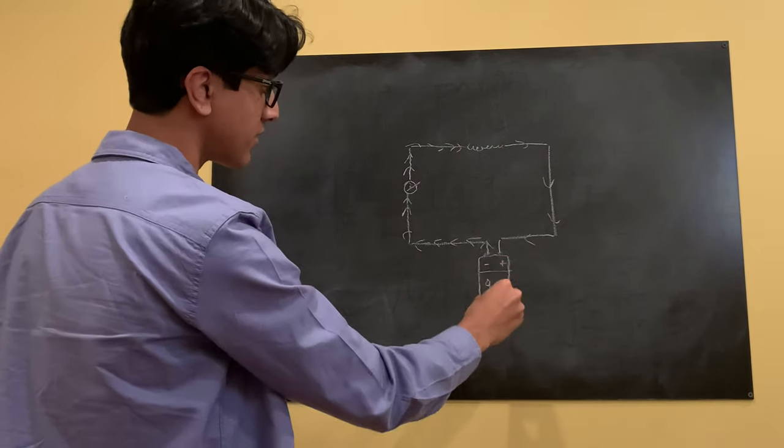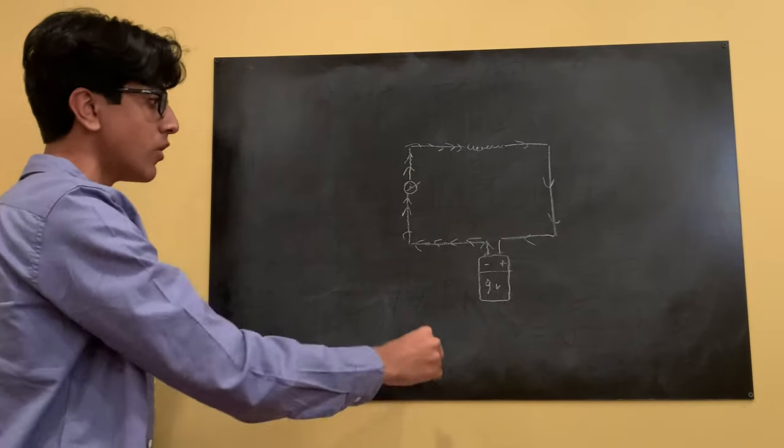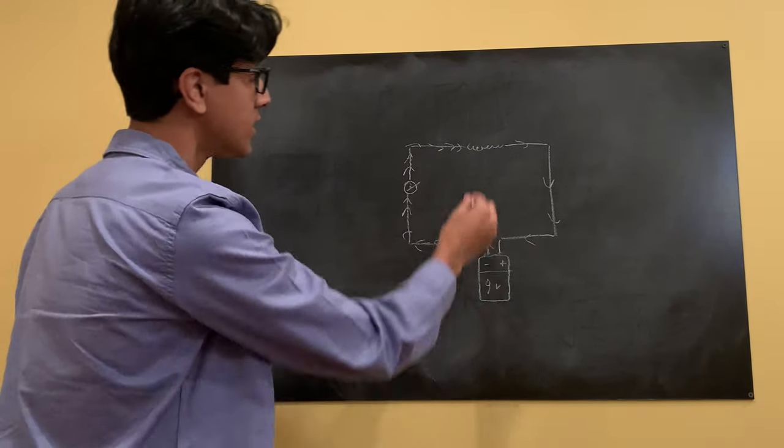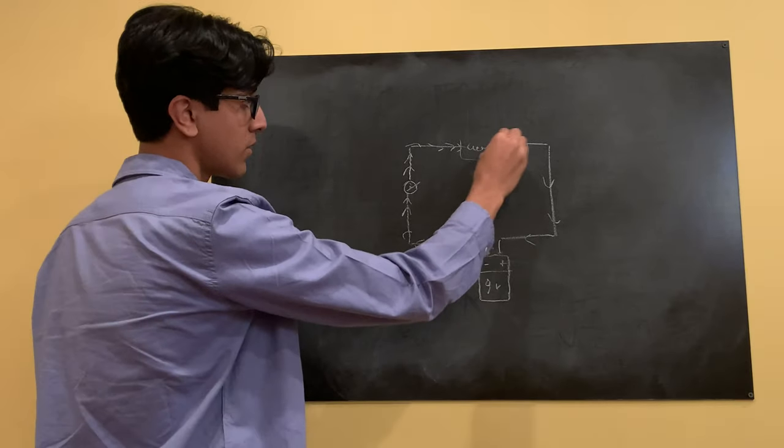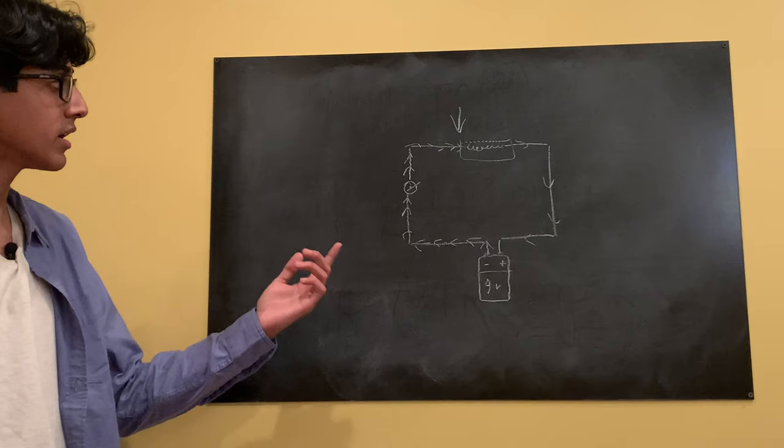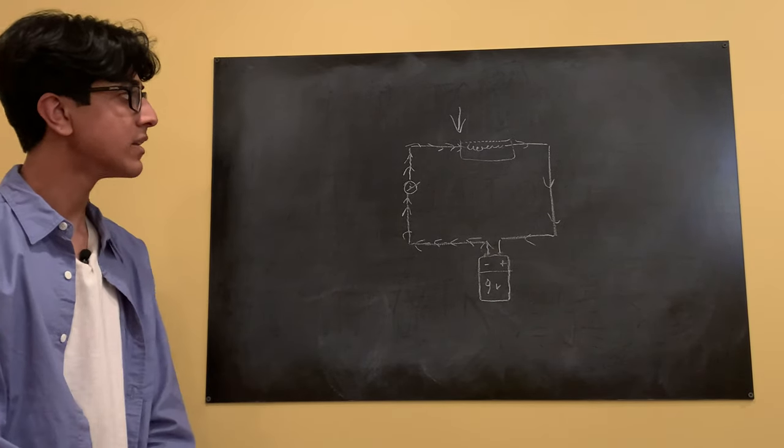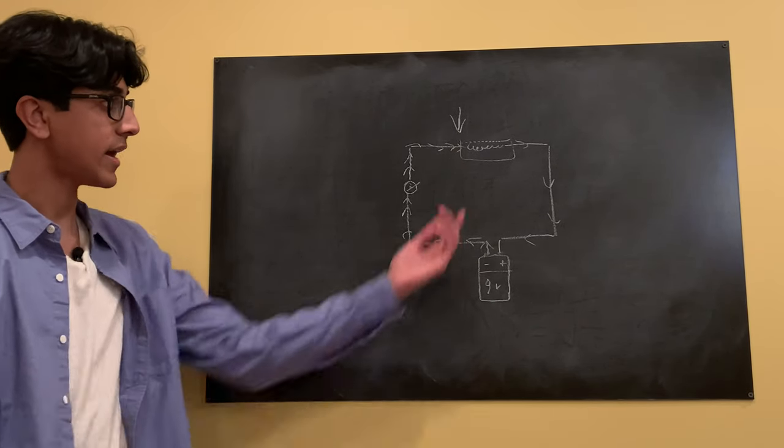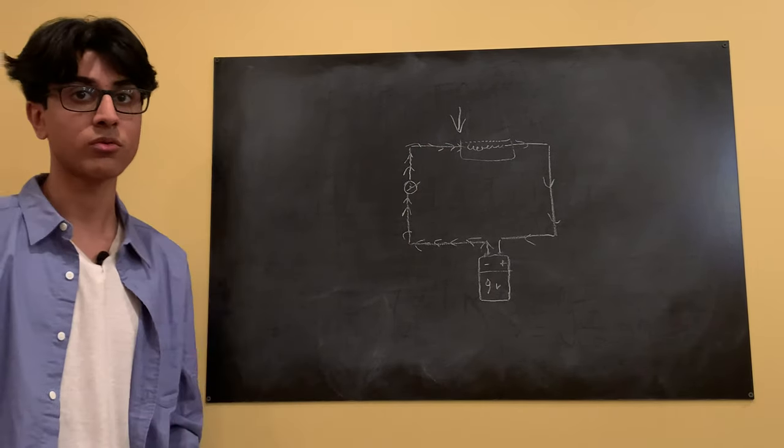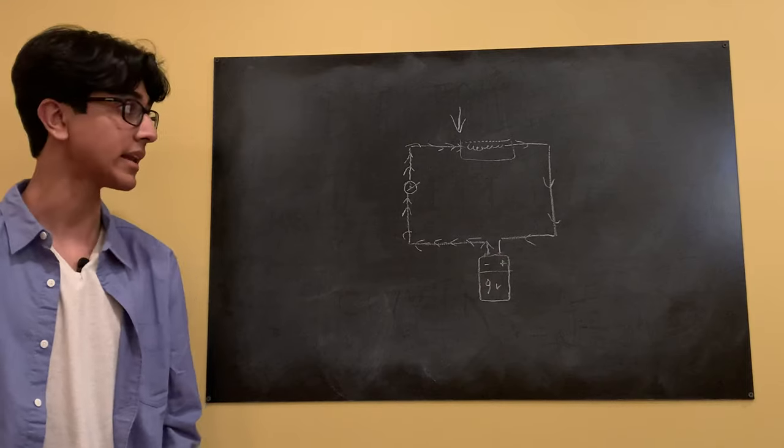And completes the circuit to the positive end. So once it completes the circuit and there's electrons flowing through, this right here is our nichrome wire that we're going to be using and the nichrome wire is actually where the ignition is going to be taking place, so I'll have this hooked up right next to our fuse or whatever we're trying to ignite.